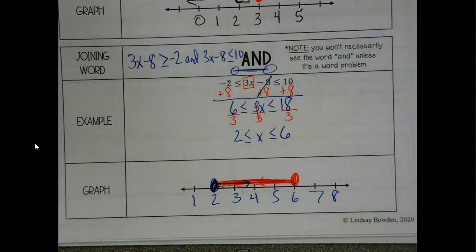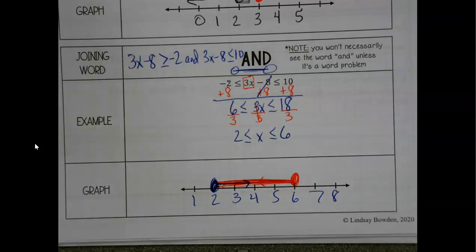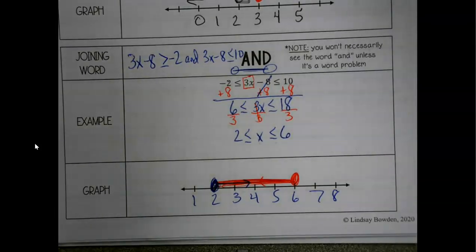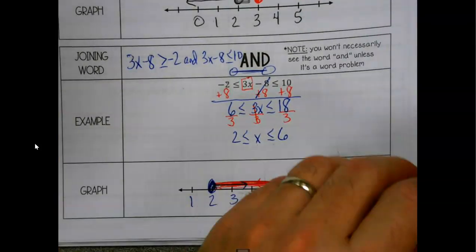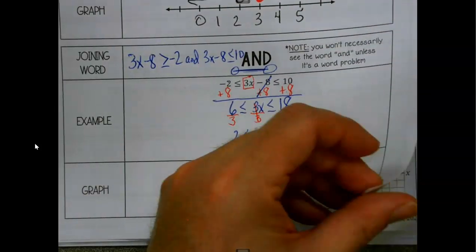Typically with 'and' inequalities the graph looks like a big barbell — you color in the middle. 'Ors go out, ands look like a barbell' — that's going to be right 95 times out of 100. If you see 'and,' make sure the two pieces are coming together.